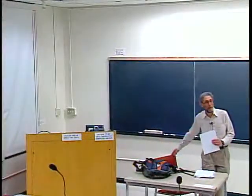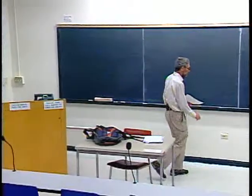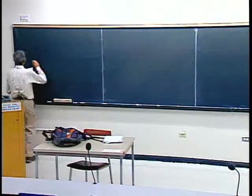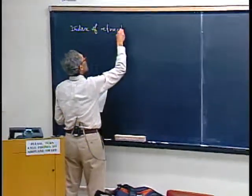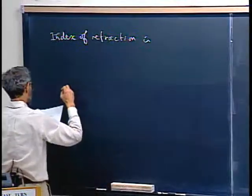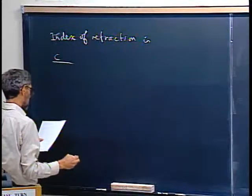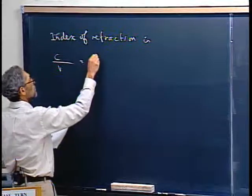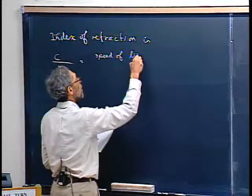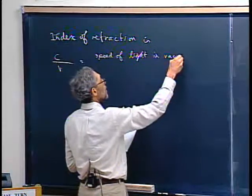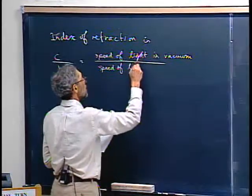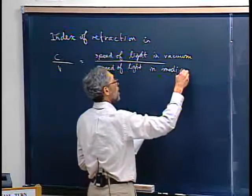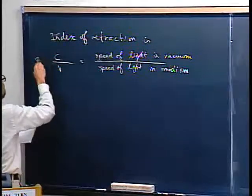Since some of you are doing projects with caustics, I want to talk about refraction to start with. That's a little bit separate from the syllabus, and then I'll continue with what's on the syllabus. The index of refraction is C — the speed of light in the vacuum — over V, the speed of light in the medium, like glass or water or metal. I'm using eta for the index of refraction.